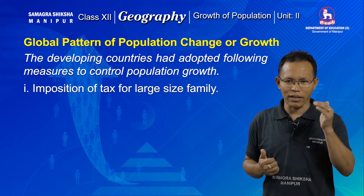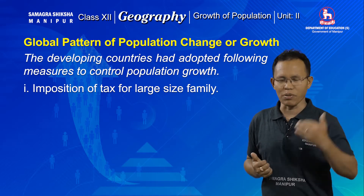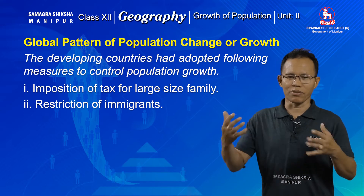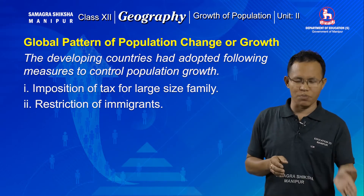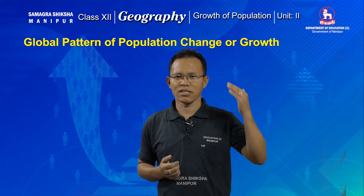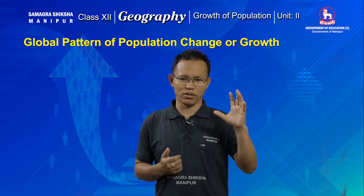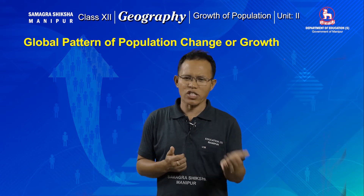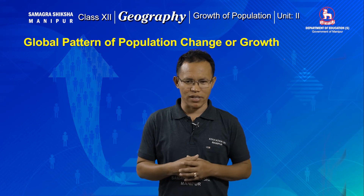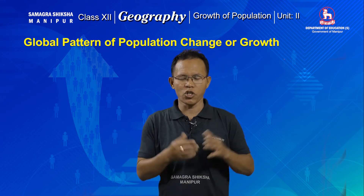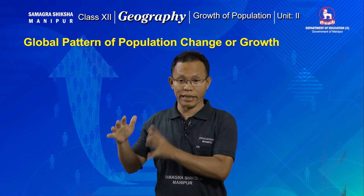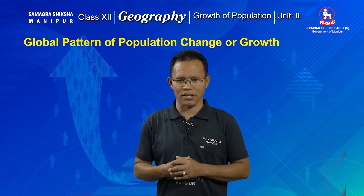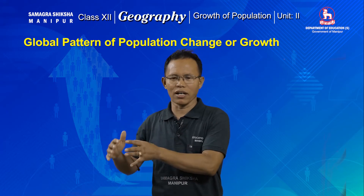The second measure for controlling population in developed countries is restriction of immigrants. Immigrants are people who are coming from other countries and settling in a particular country. The developed countries, which have already successfully implemented population control programs, now face a population deficit. The shortage of population is also a problem in developed countries because, due to the paucity of population, the existing resource potential cannot be fully developed, and the economic development of that country is also held back.